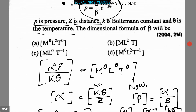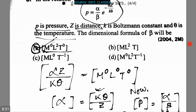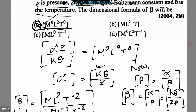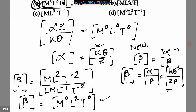So option A, that is M⁰ L² T⁰, is the correct answer. The dimensional formula of beta will be M⁰, L², and T⁰. This is our answer.